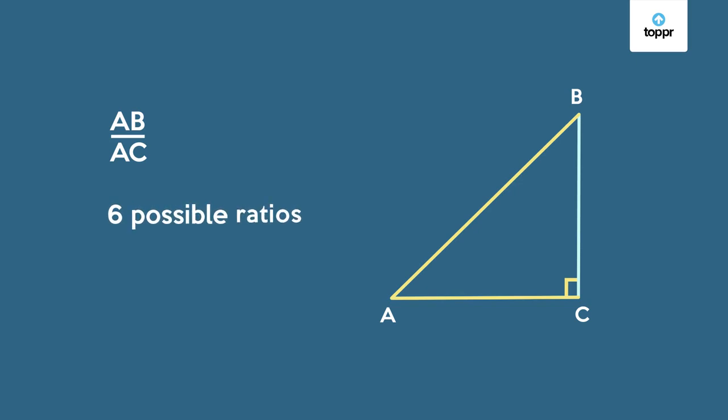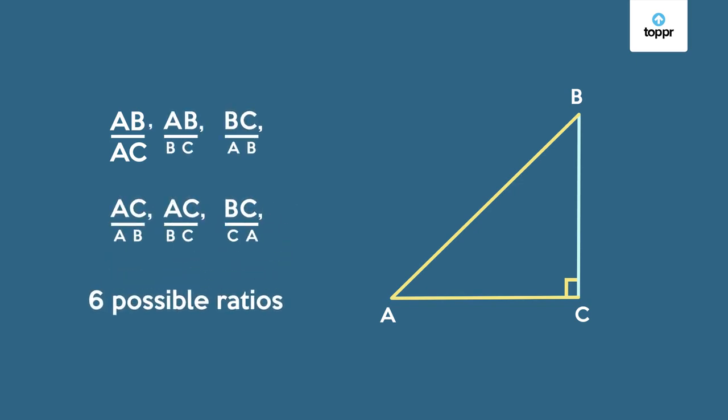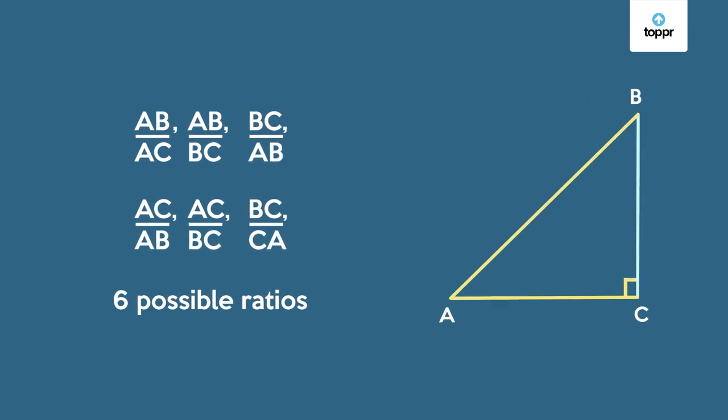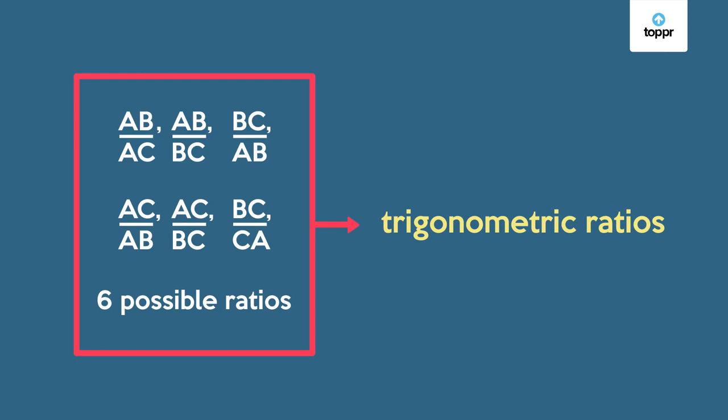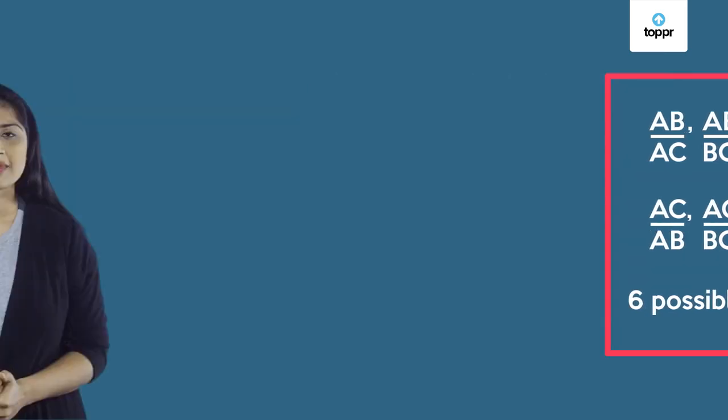Six different possible ratios among the sides of this triangle, and they are listed here. So basic trigonometry is about these six ratios, their properties, and their applications. Not surprisingly, we call these ratios as trigonometric ratios.